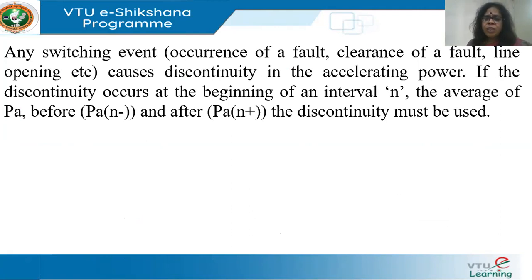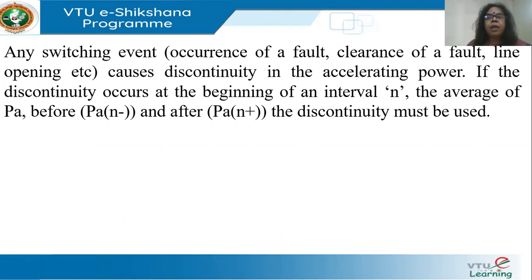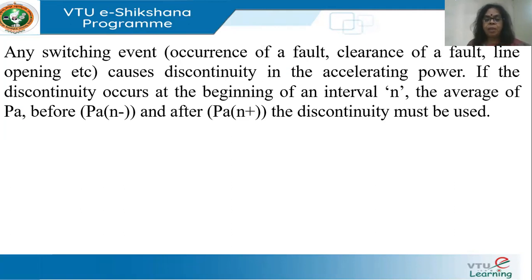Any switching event is a disturbance — a fault can be sustained (not cleared) or cleared by a breaker. Both the occurrence and clearance of a fault are disturbances. Any switching event causes a discontinuity in the accelerating power because Pmax will change as the network configuration changes.